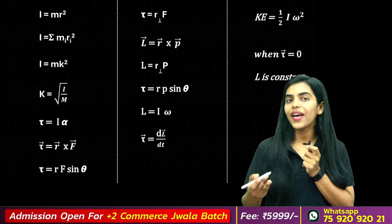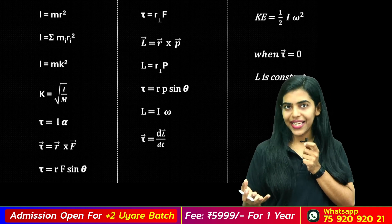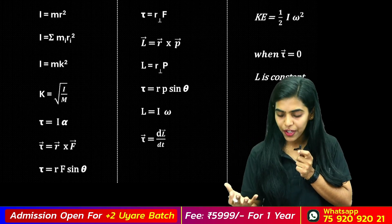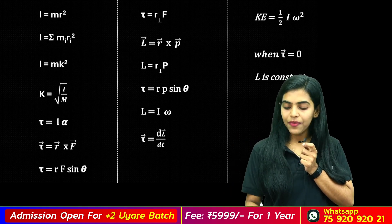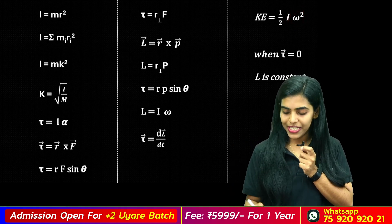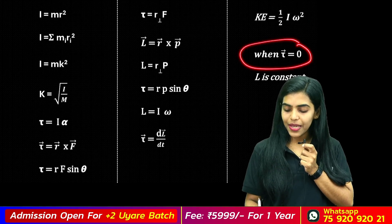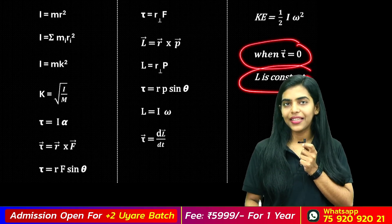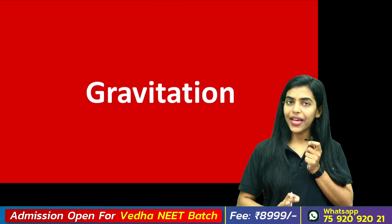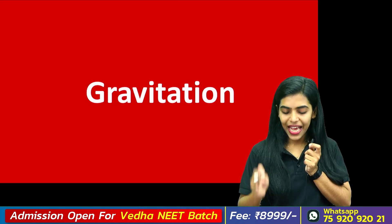Translational kinetic energy is half mv squared. Mass corresponds to moment of inertia, and v corresponds to omega (angular velocity). When net torque is zero, angular momentum L is conserved — L is constant. These are the key equations for the system of particles chapter.